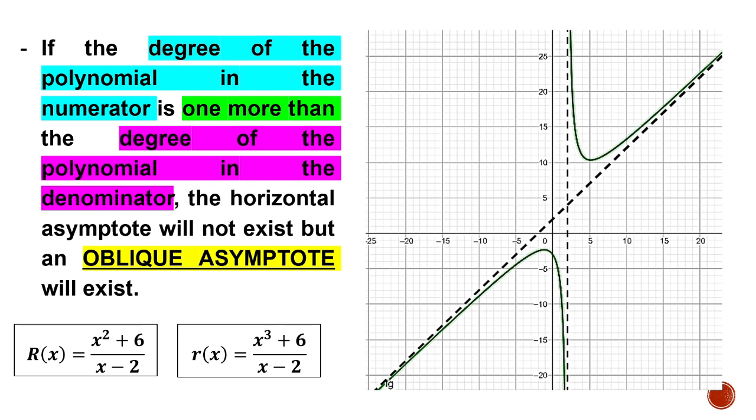If the degree of the polynomial in the numerator is one more than the degree of the polynomial in the denominator, the horizontal asymptote will not exist, but an oblique asymptote will exist. We talked about horizontal asymptote in the previous video, and we said that if the degree of the numerator is greater than the degree of the denominator, the horizontal asymptote will not exist.